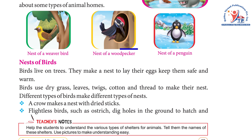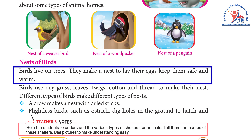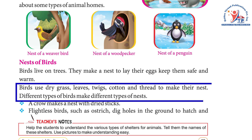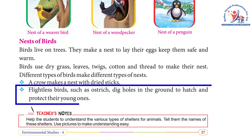Nests of birds — including the weaver bird, woodpecker, and penguin. Birds live on trees and make nests to lay their eggs, keep them safe and warm. Birds use dried grass, leaves, twigs, cotton, and thread to make their nests. Different types of birds make different types of nests. A crow makes a nest with dried sticks. Flightless birds such as the ostrich dig holes in the ground to hatch and protect their young ones.